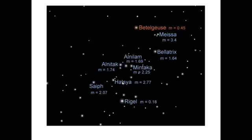So what exactly does magnitude mean? Well, apparent magnitude is how bright a star appears to be.